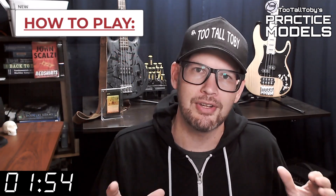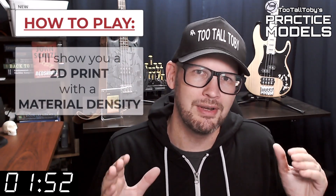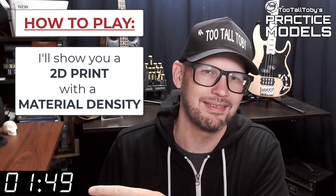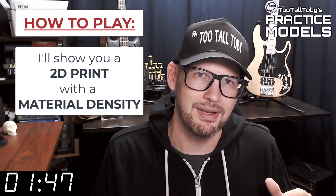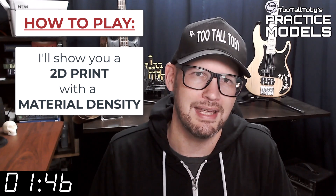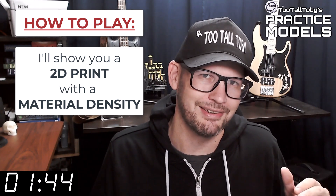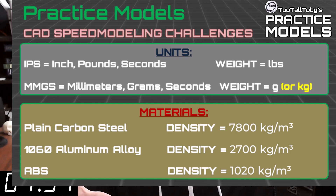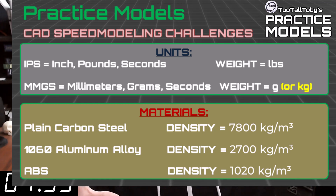Here's how these challenges work. I'm going to show you a 2D print when this timer gets to zero. On that print, you're going to see a material property and a material density — it's going to be one of these three material properties. So take a moment, grab a screen capture of what's on the screen right now, and be sure that your materials in your library match these properties.